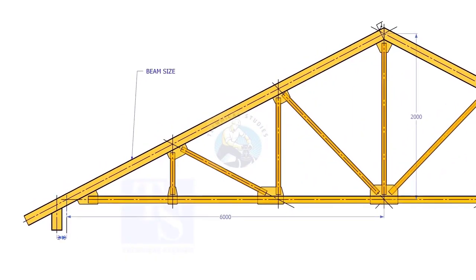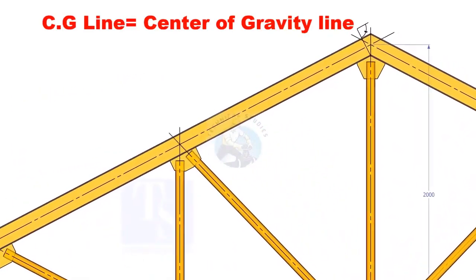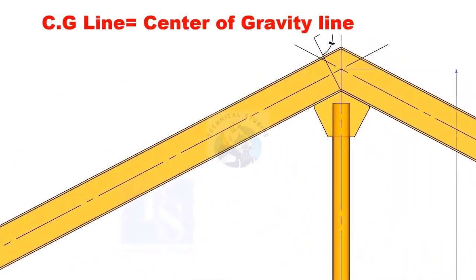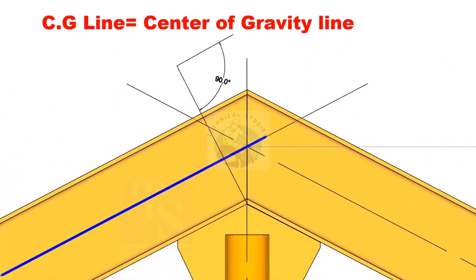In the drawing, usually, the span and the height through the CG line of a truss are given. Remember that the CG line doesn't pass through the center of all the objects. It depends on the shape and cross section of an object.